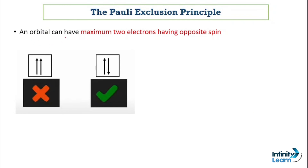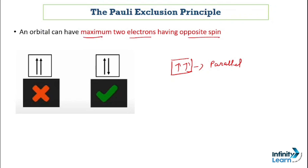An orbital can have a maximum of two electrons having opposite spin. When two arrows in an orbital point in the same direction, they are called parallel spin — this is incorrect for orbital stability. When both arrows point in different directions, the orbital has two electrons with opposite spin, which is the correct and stable configuration.